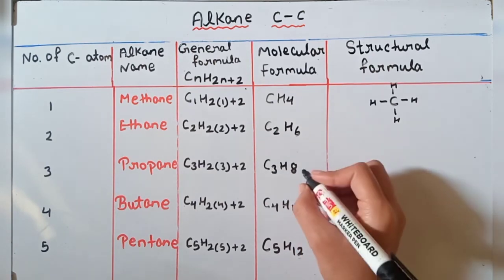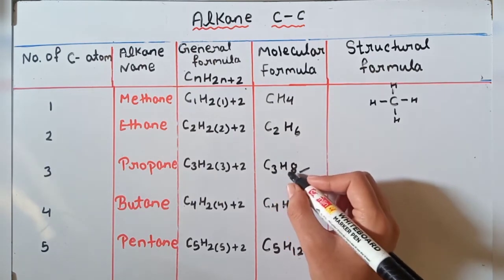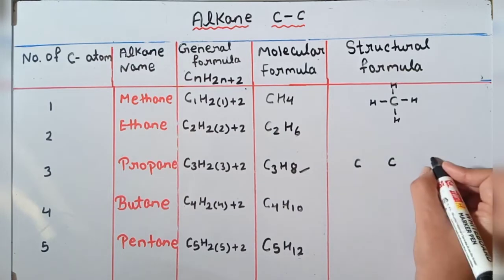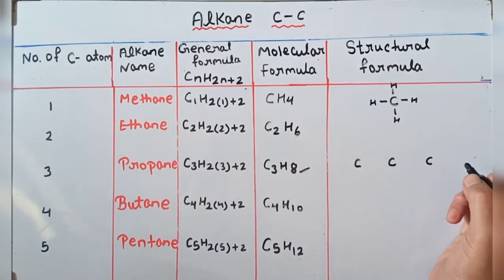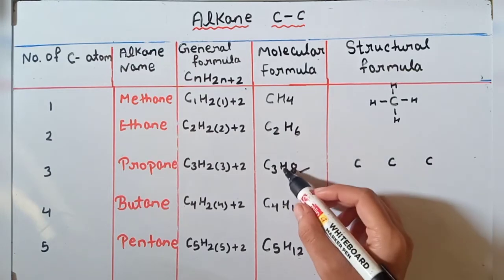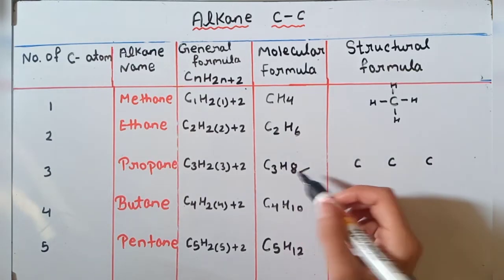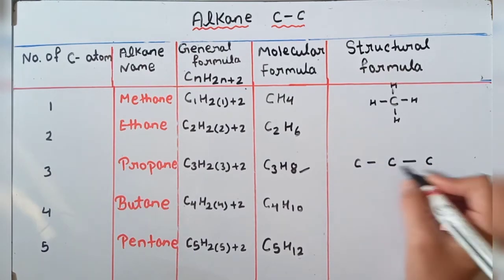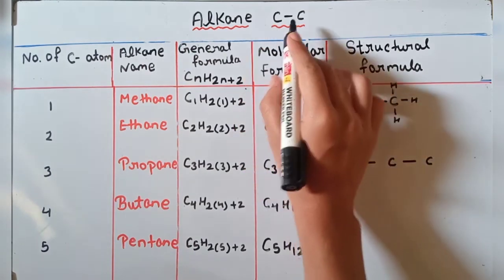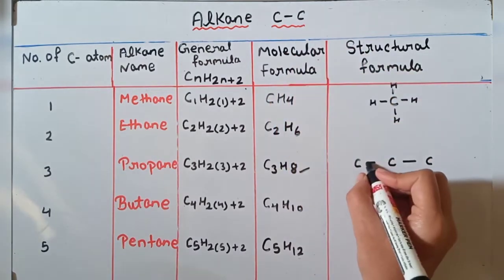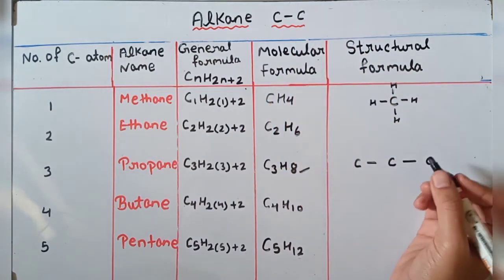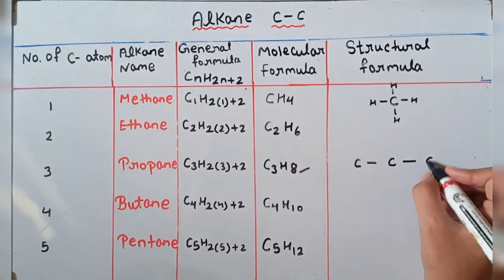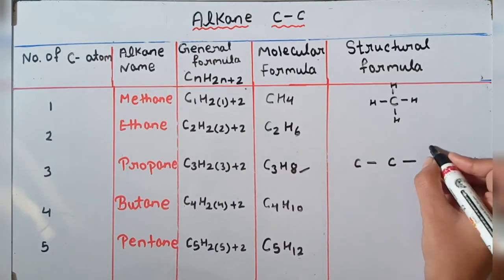Ab hum draw karte hain for C3H8, that is for propane. Carbon kitne hain — 3. So 1, 2, 3 — okay, 3 carbon honge, hydrogen 8 hai. Sabse pehle hum single bond yahan par add karenge carbon aur carbon ke beech mein, because it is an alkane — carbon to carbon single bond hone chahiye.